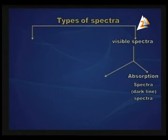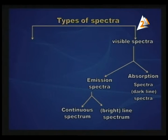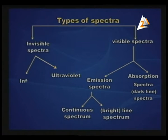Talking about types of spectra, we have two types: visible spectra and invisible spectra. Visible spectra includes absorption spectra, which we call dark line spectra, and emission spectra, which includes two types: bright line spectra and continuous spectrum. Invisible spectra includes ultraviolet and infrared.